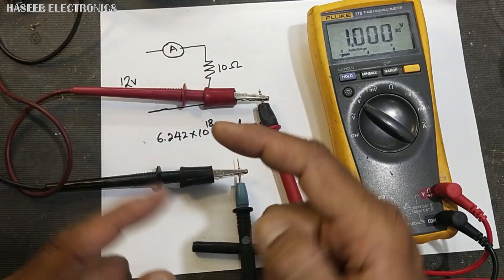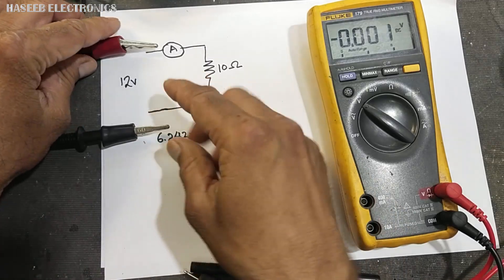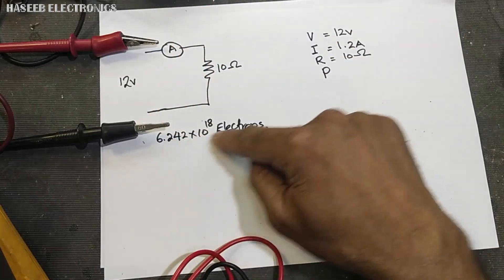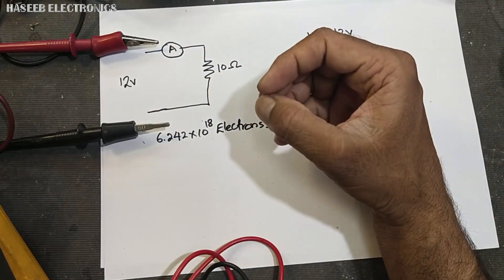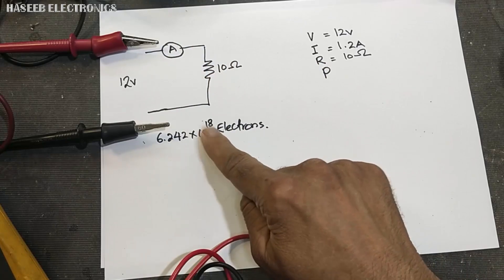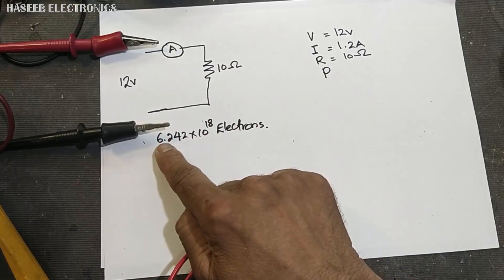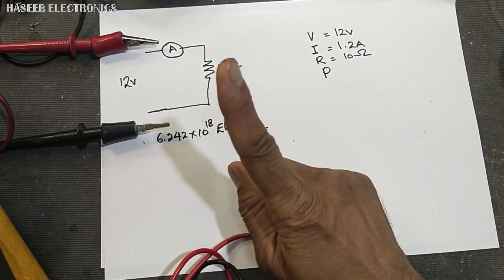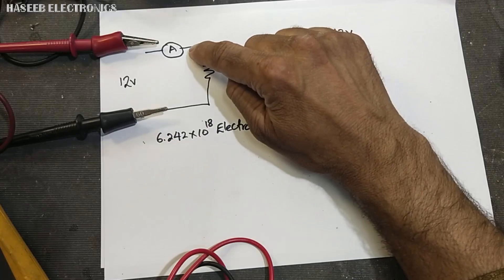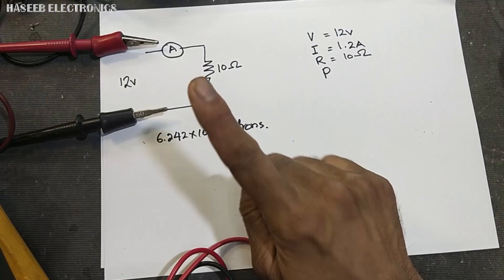If we connect one volt to a conductor and it allows those electrons — 6.242 × 10¹⁸ electrons — to move through it, we have two key items: the number of electrons and the time. If that number of electrons moves past any point of the circuit in one second, it is called one ampere. That is what current is — one ampere of current flowing.